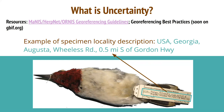To understand what uncertainty is, I am using an example — looking at a specimen and its locality data to understand sources of uncertainty in relation to a particular locality description. I'm using a georeferencing guide available online. There is also a georeferencing best practices manual being revised by John and colleagues, which will be available on GBIF by end of spring or summer. These represent many years of work that John and a large group of researchers have developed.